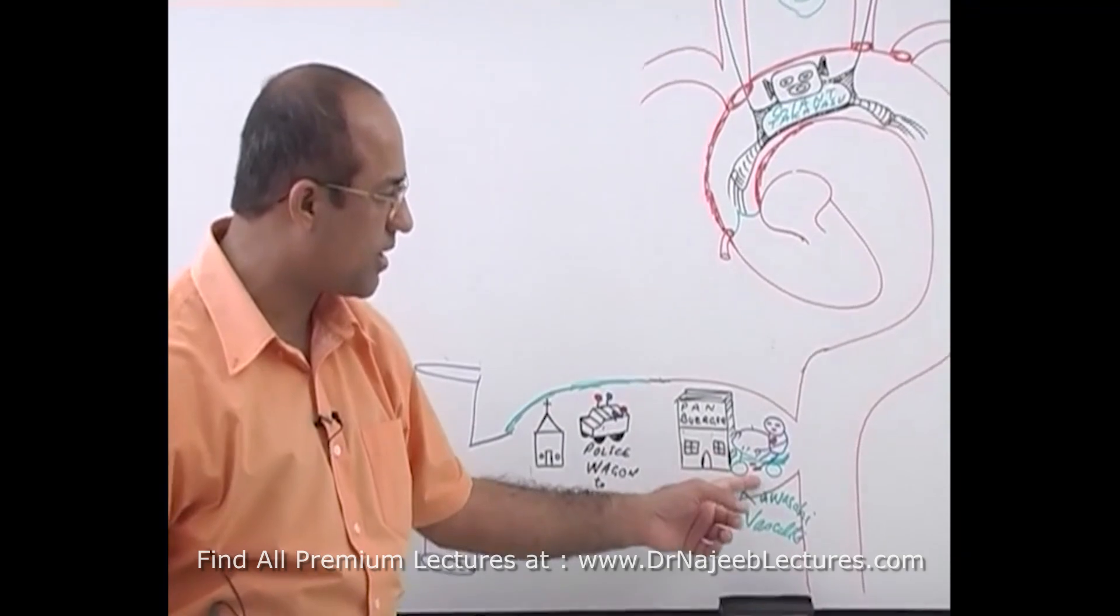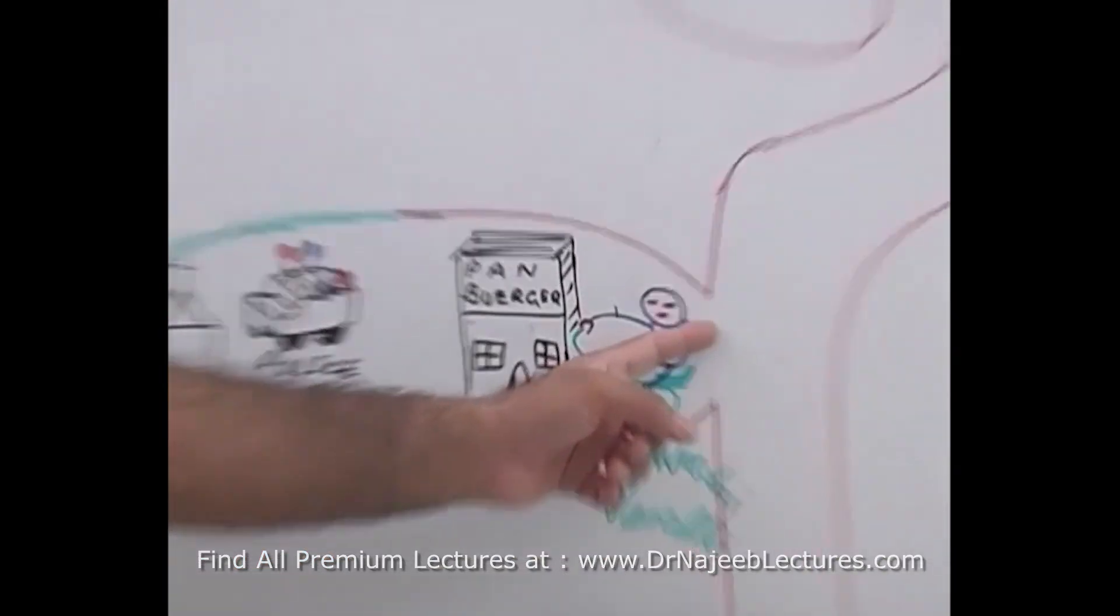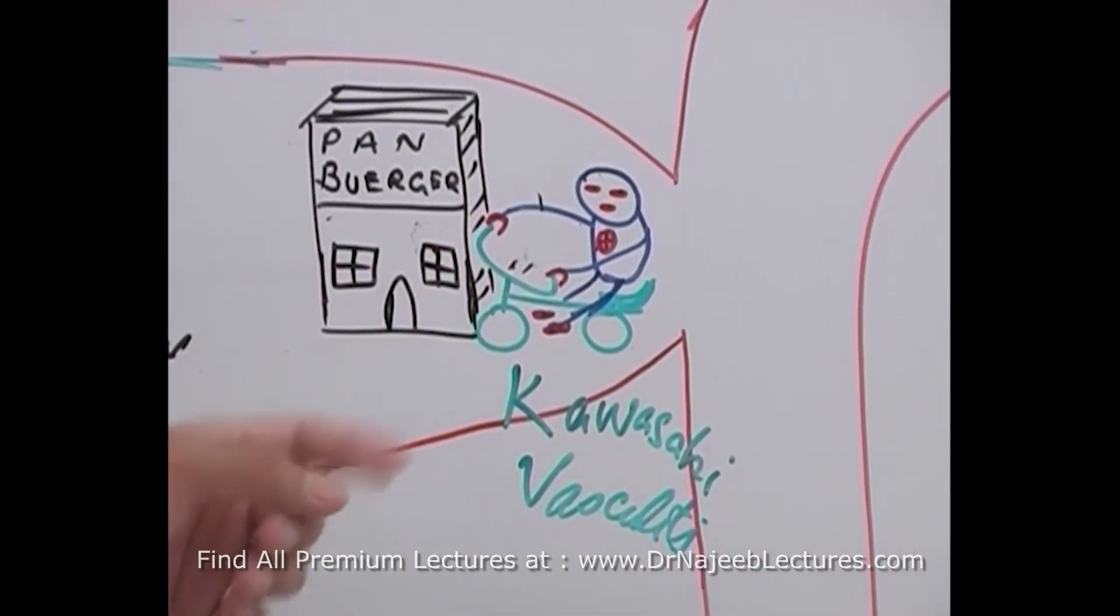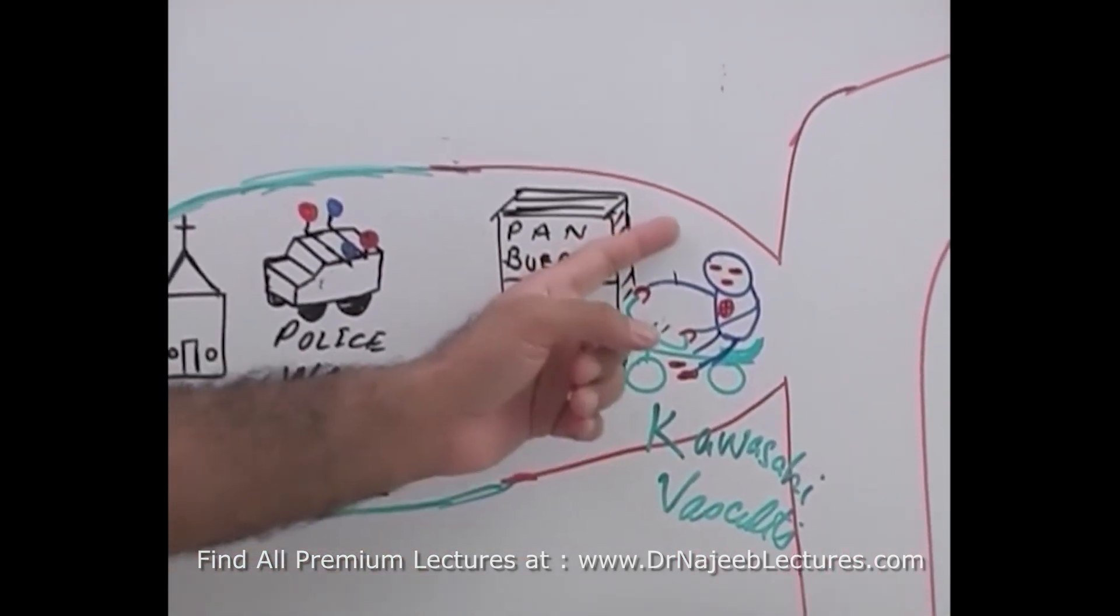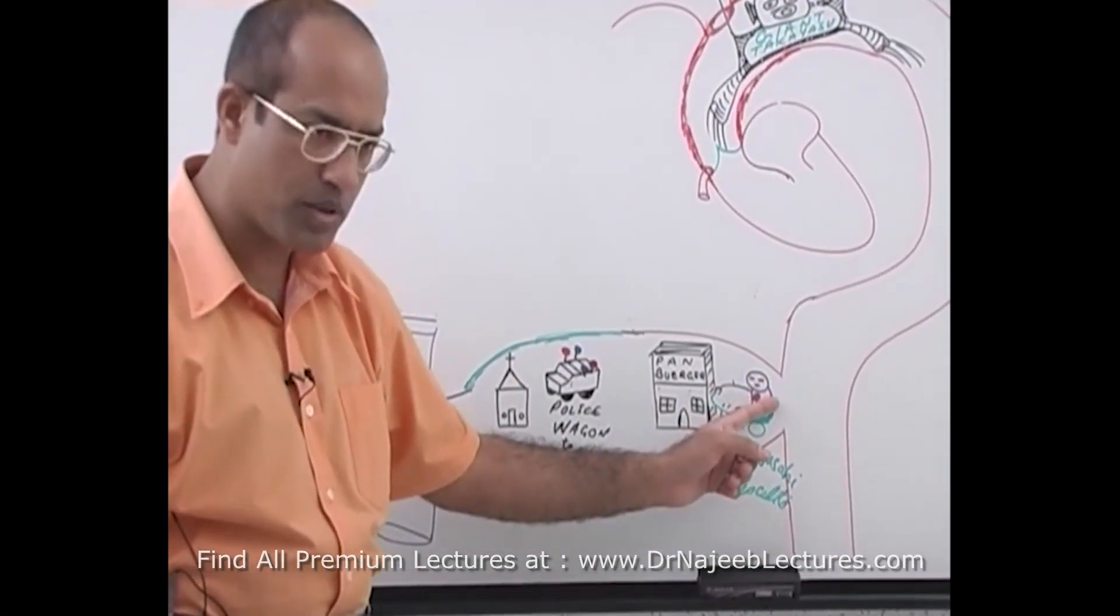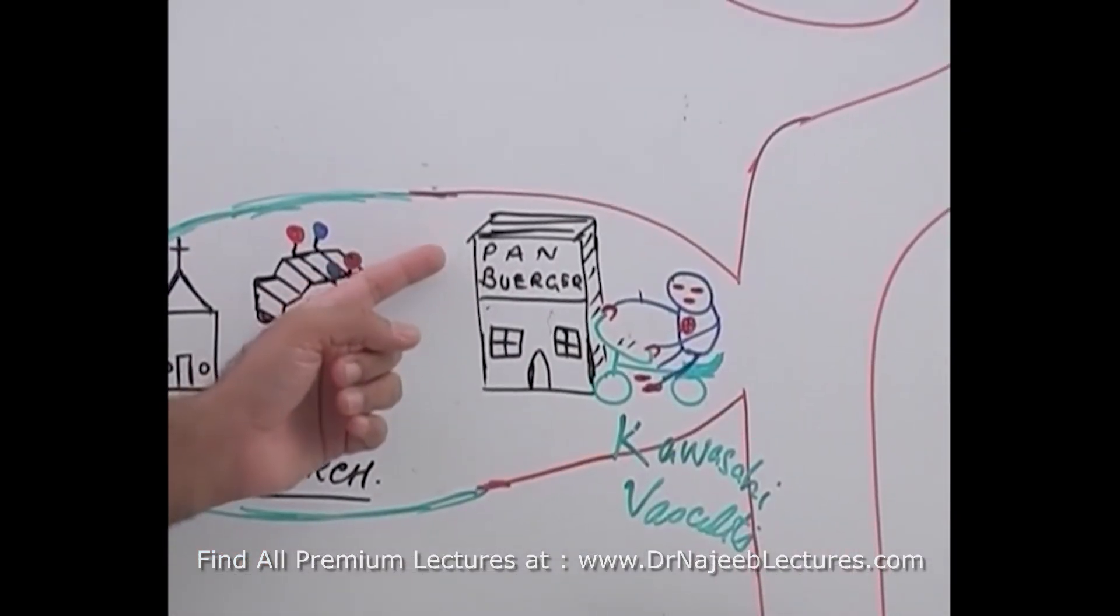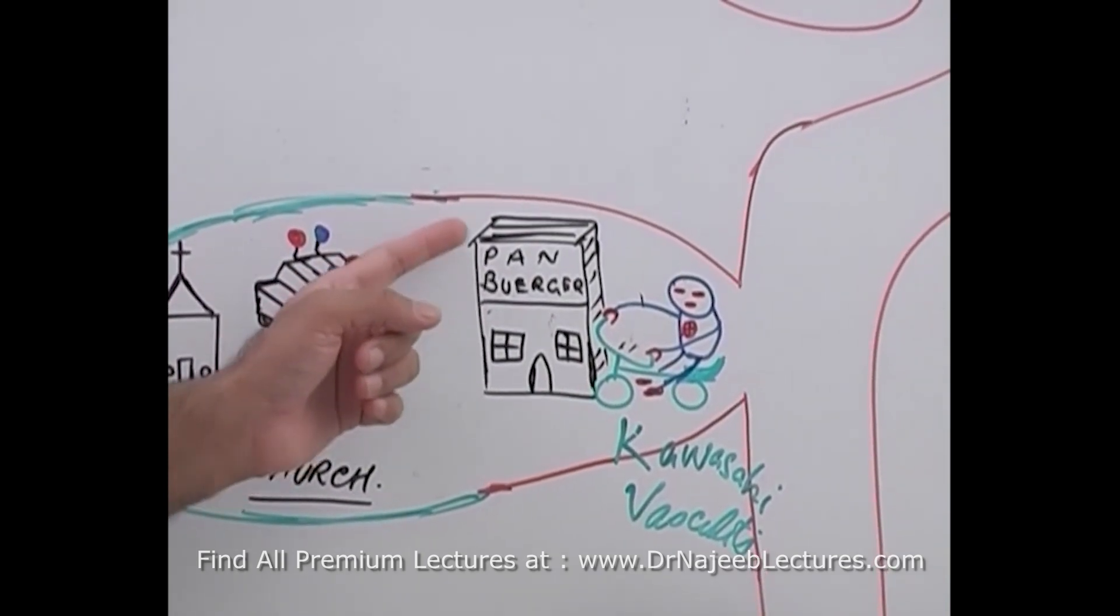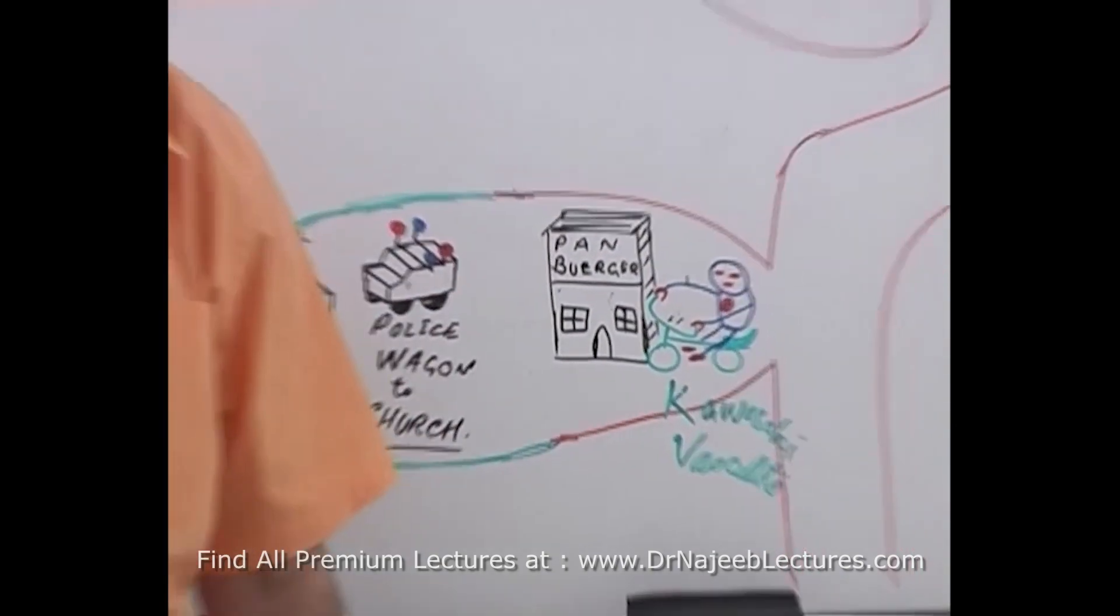They can be easily remembered by this diagram, and this diagram is showing the Kawasaki baby going to Pan Burgers. What it should remind you is that medium sized vasculitis consists of Kawasaki disease which is in the babies, Pan stands for polyarteritis nodosa, and the third category is Buerger's disease.